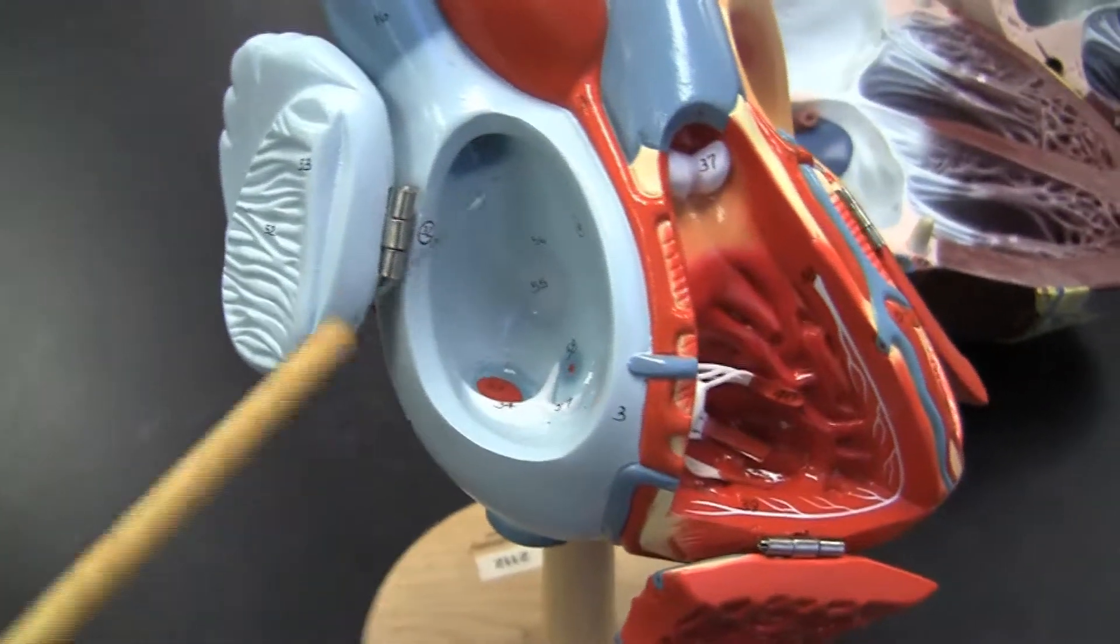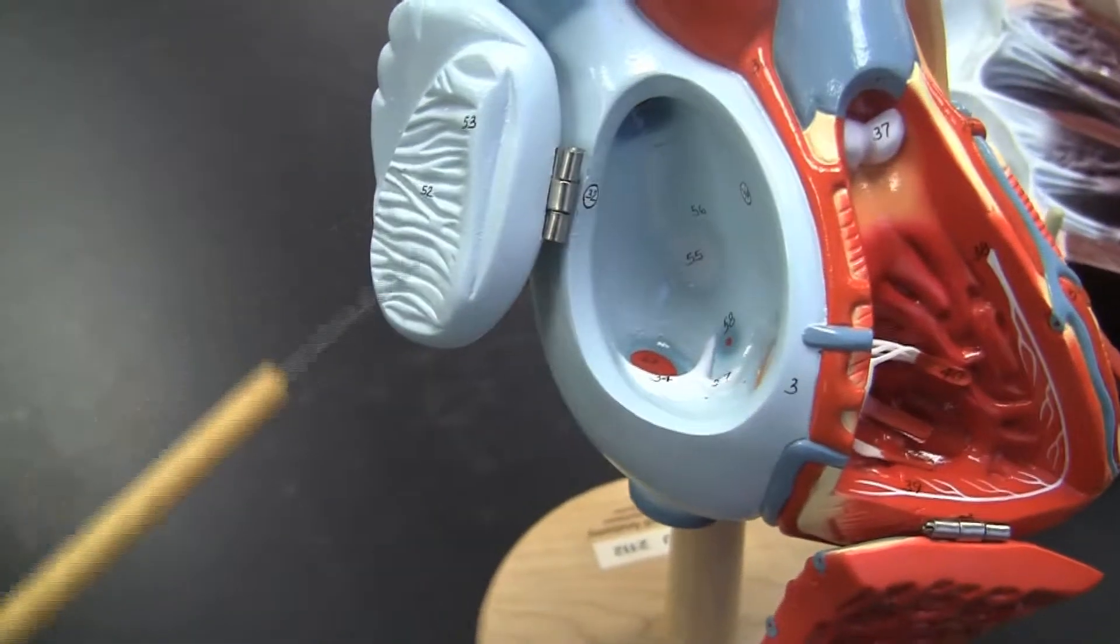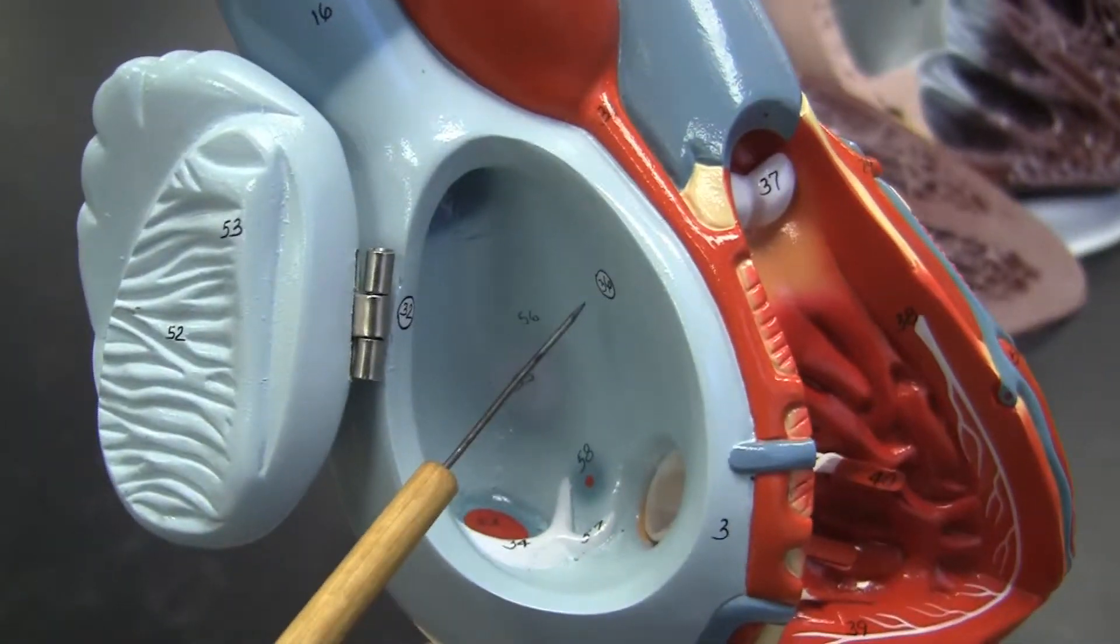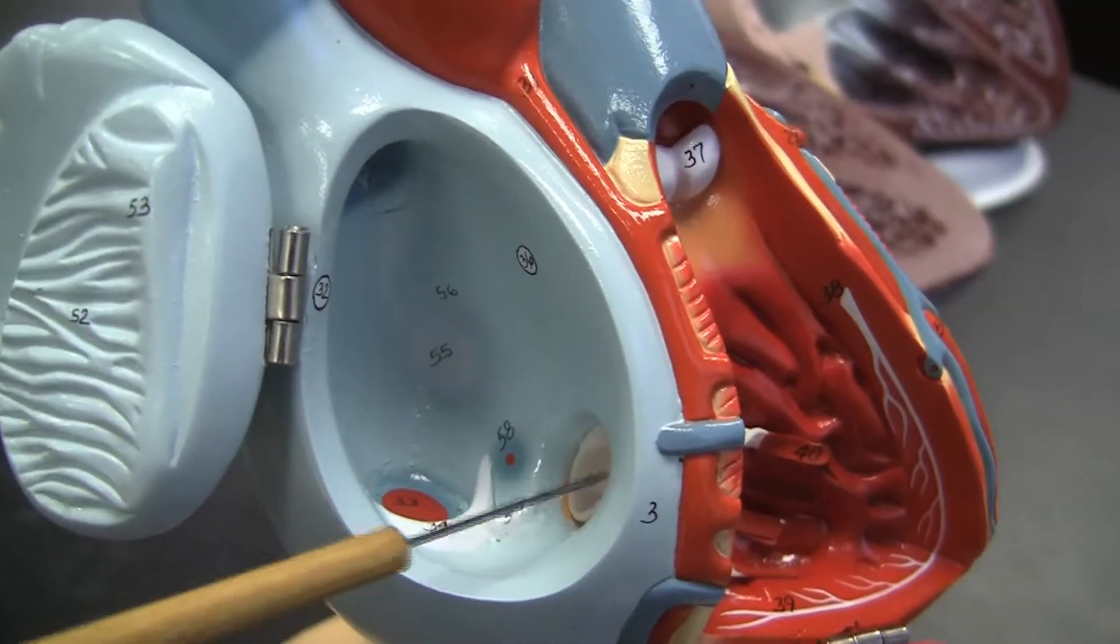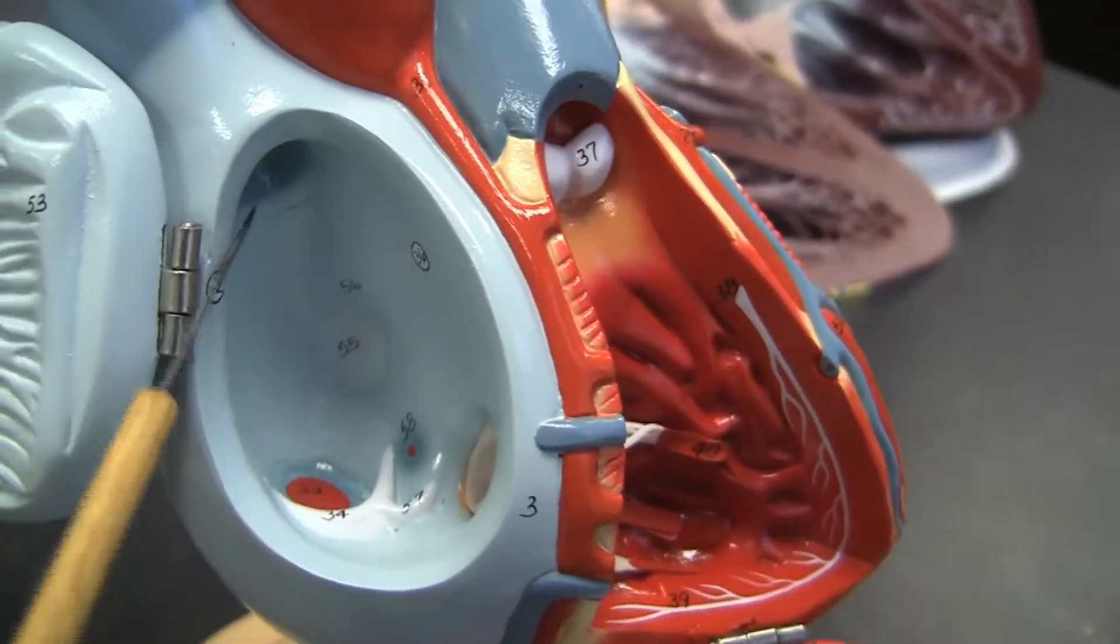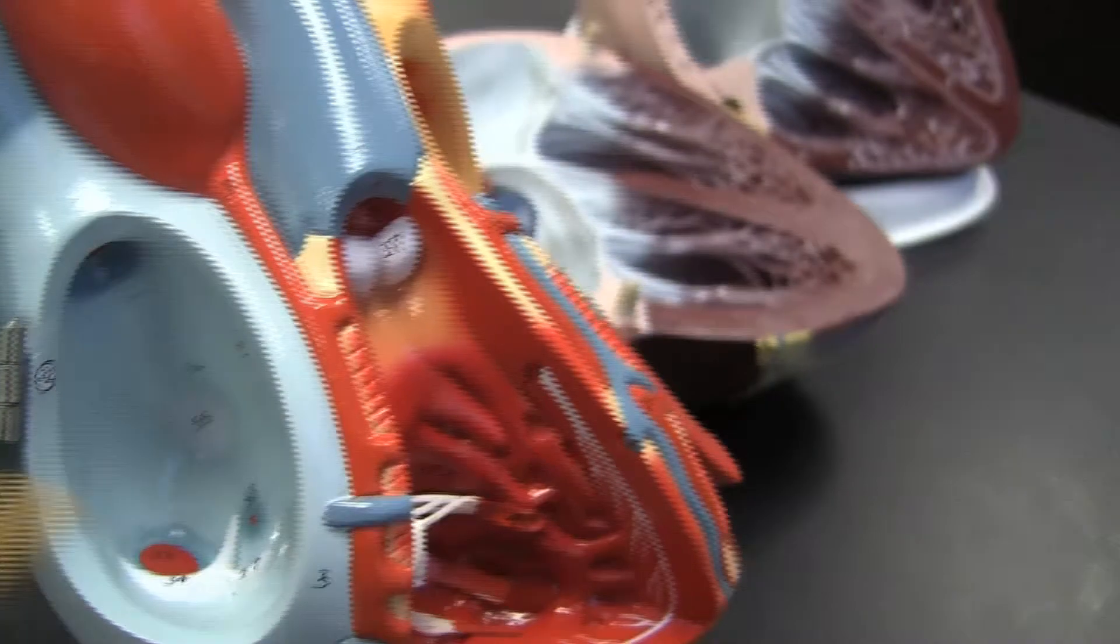All right, right atrium, pectinate muscles. We've got the fossa ovalis, tricuspid valve, superior and inferior vena cava running to it.